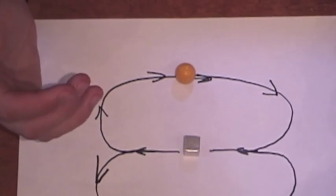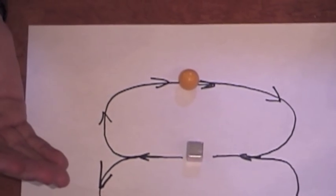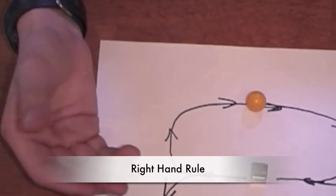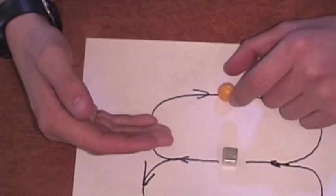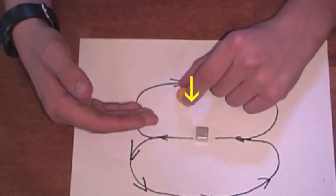The way to determine the direction of the force, we use what is called the right-hand rule. Now, we're assuming that this electric charge is positive. And let's say it's moved in this direction.